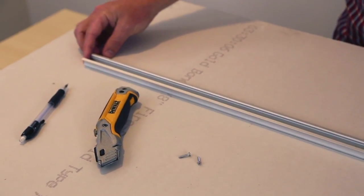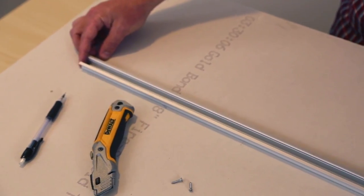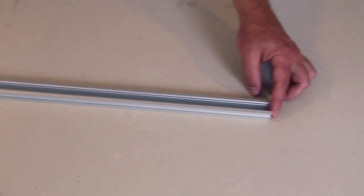The next step will be to trace the channel. That way we can cut a notch for the channel to sit flush inside of the drywall.